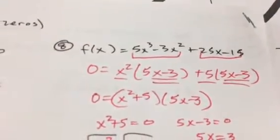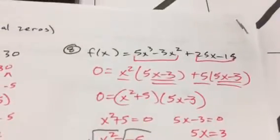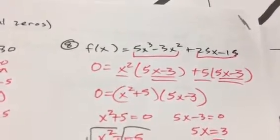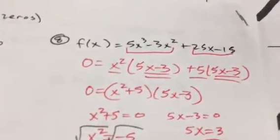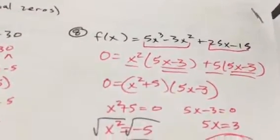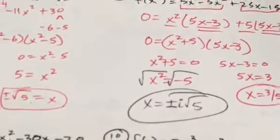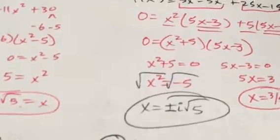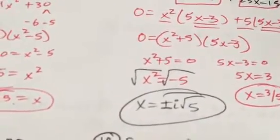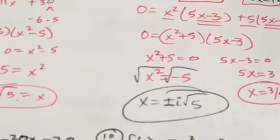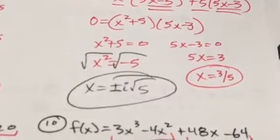Factor out 5 from 25x and 15, leaving 5x - 3. Notice the same two terms in parentheses. Put those together: (x² + 5)(5x - 3). x² + 5 = 0 gives x² = -5. Taking the square root of a negative gives i, so x = ±i√5. The other equation, 5x - 3 = 0, gives x = 3/5.